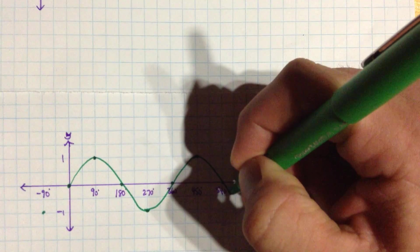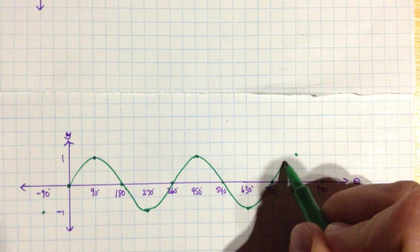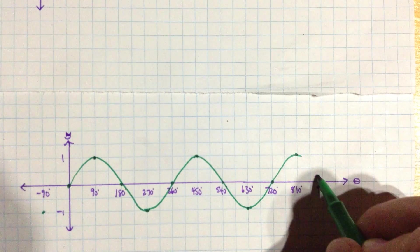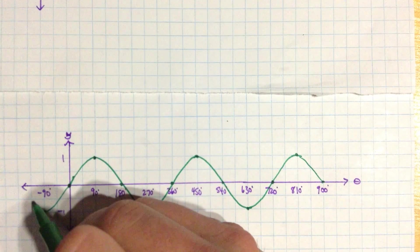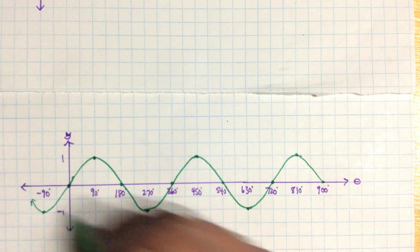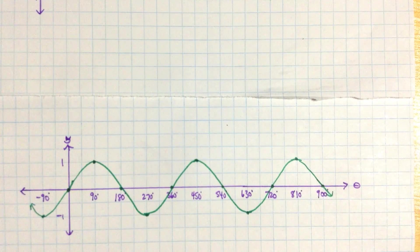It looks like a wave. And we often will call it the sine wave. And it extends back in this direction as well. So the periodic nature of this function means that it will repeat.